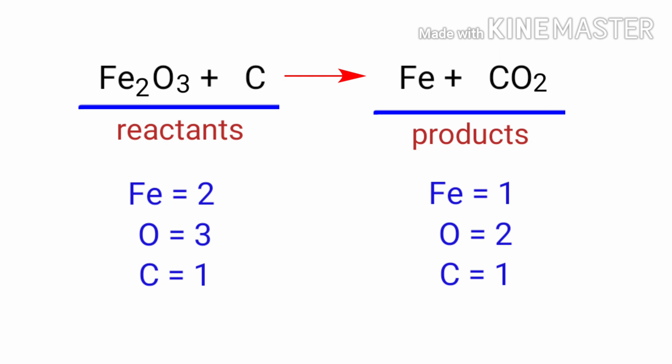In the reactants side there are 2 iron atoms, 3 oxygen atoms, and 1 carbon atom present. And in the products side there are 1 iron atom, 2 oxygen atoms, and 1 carbon atom present. The number of atoms are not balanced on both sides.